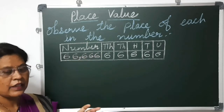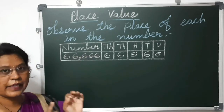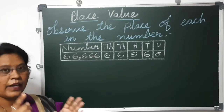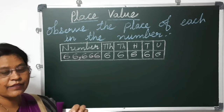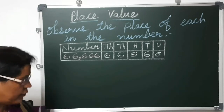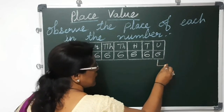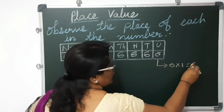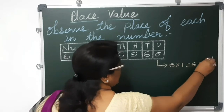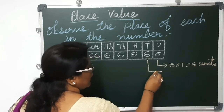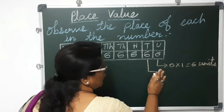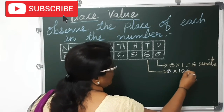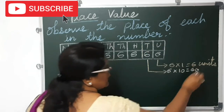There is a face value also, but that is not what you are learning here — here we only concern ourselves with the place values. One digit can be put in different positions of the place value and it denotes a different value. So 6 in units place: 6 into 1 equals 6. This 6 in tens place: 6 into 10 equals 60.